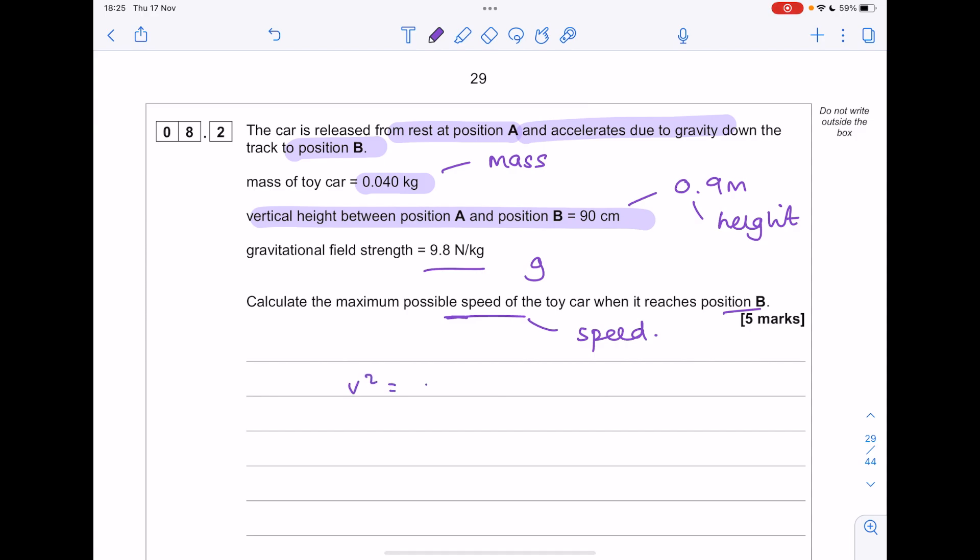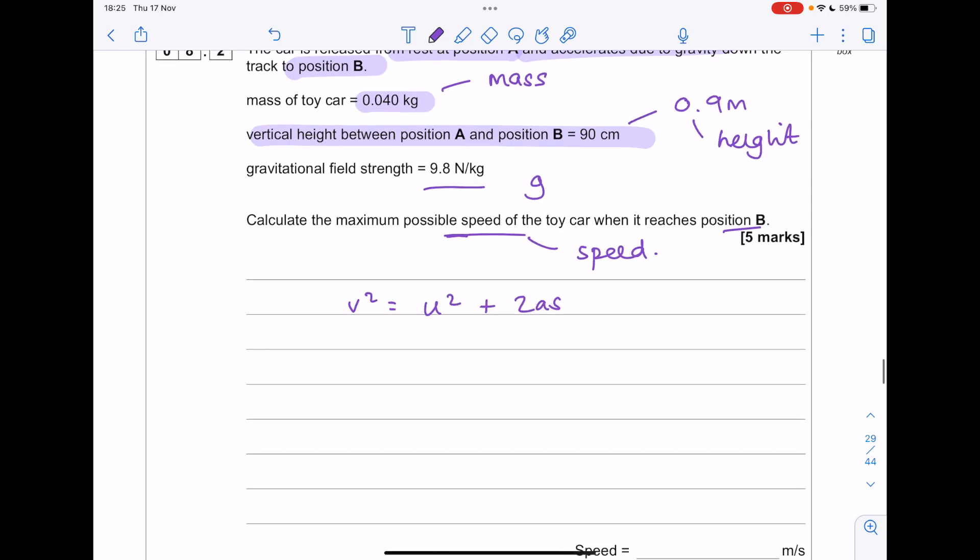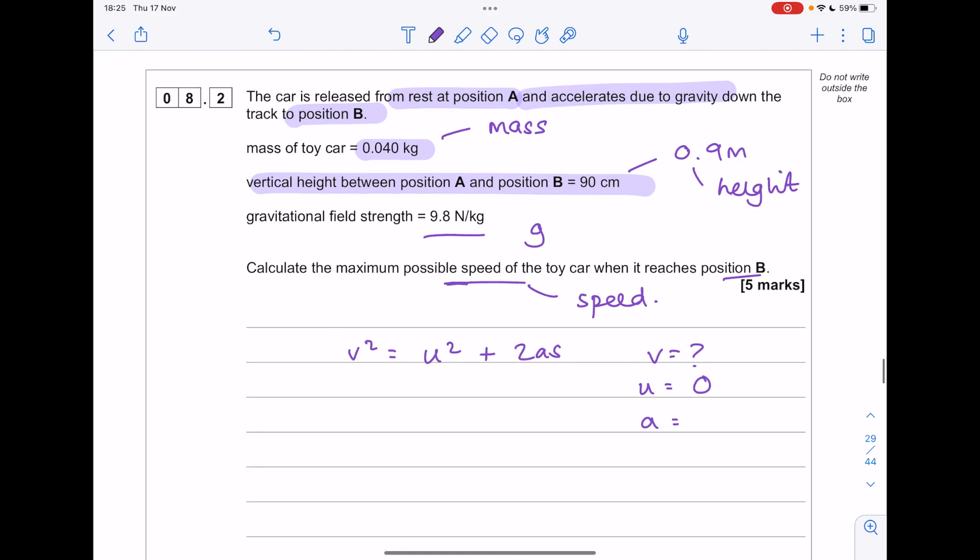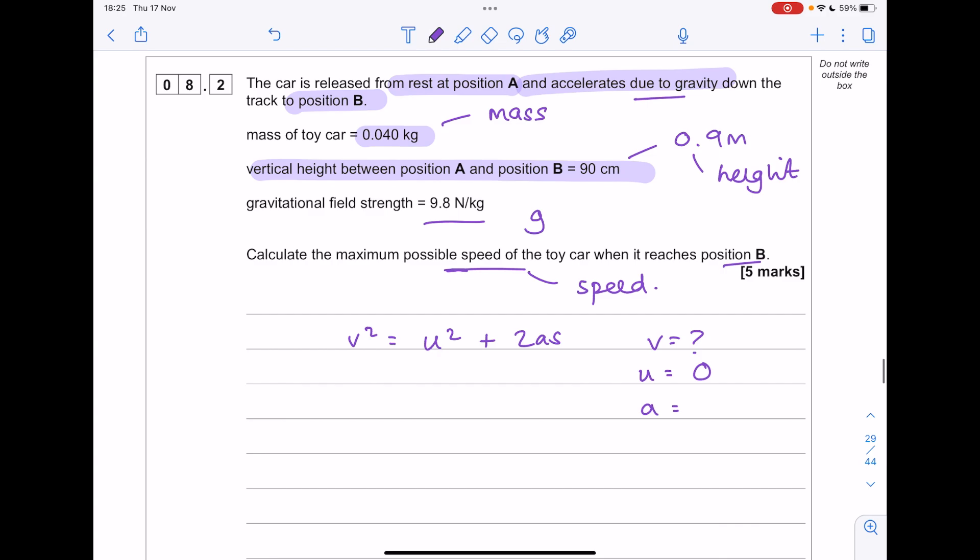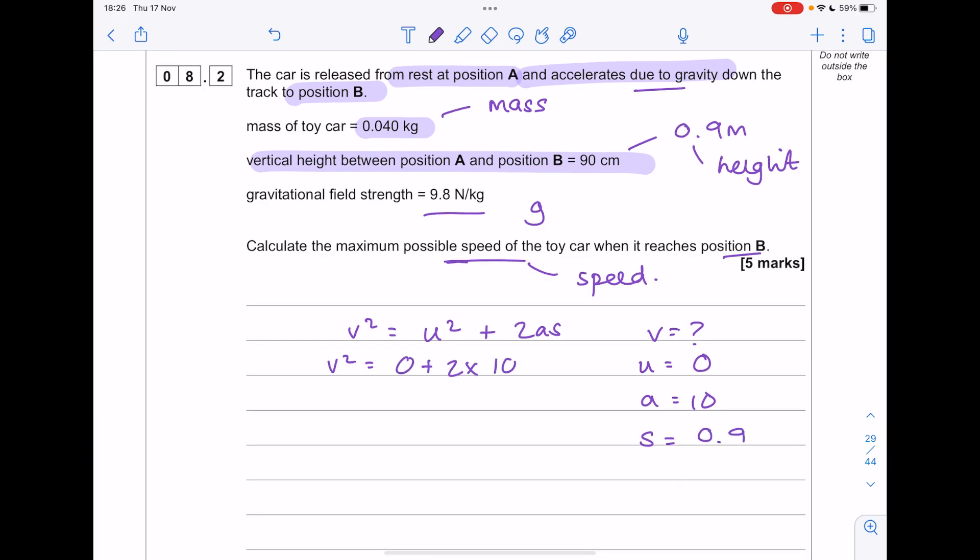So this is a Soovat equation. They're quite hard to identify. But let's have a look at what we're after. We're after the final speed. Our initial speed, because it started at rest, is zero. Acceleration due to gravity. Oh, you have to learn that value. It's 10. And distance is 0.9. Square root that value to get an answer of 4.2.